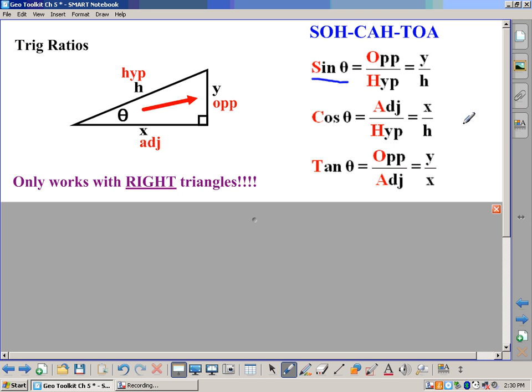And then the other trig ratio we have is called cosine, and that would be the adjacent divided by hypotenuse. In this case, it would be x divided by h.